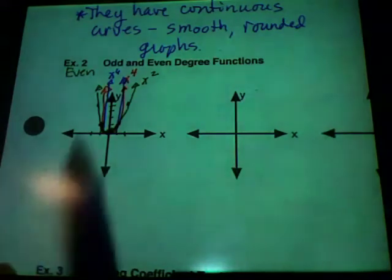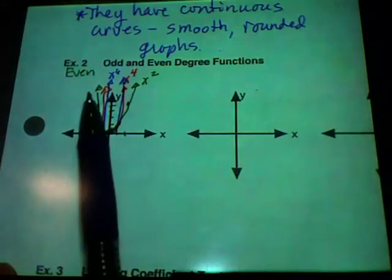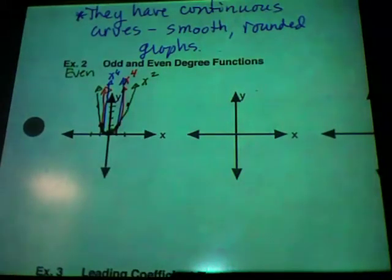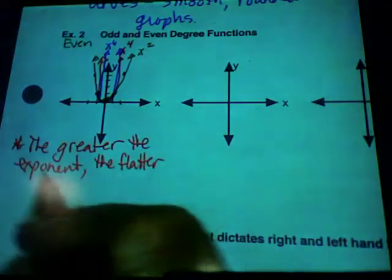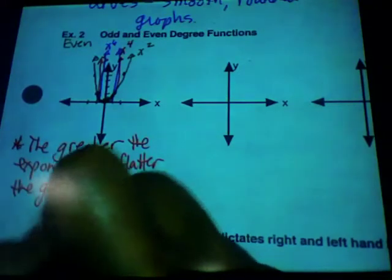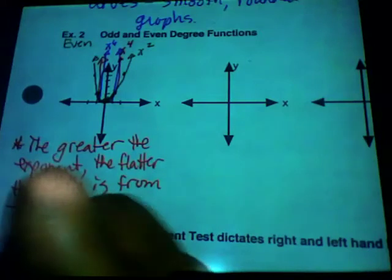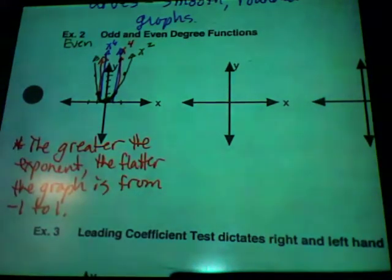Notice that all three of them, look at their end behavior. The start of the graph and the end of the graph. Aren't they both facing up? Okay. So just an observation. This is something that you might want to write down here in your notes. The greater the exponent, the flatter the graph is from negative 1 to positive 1.